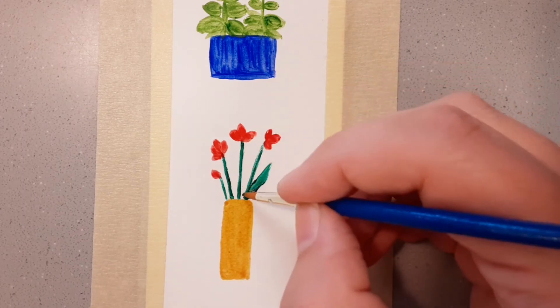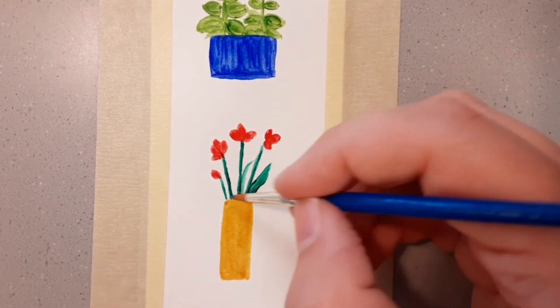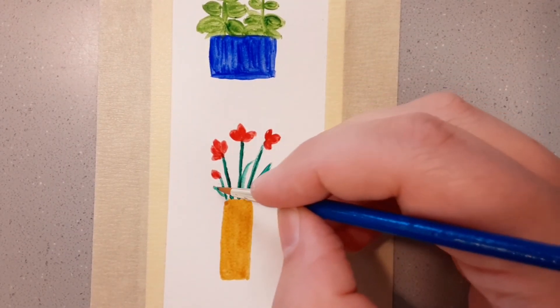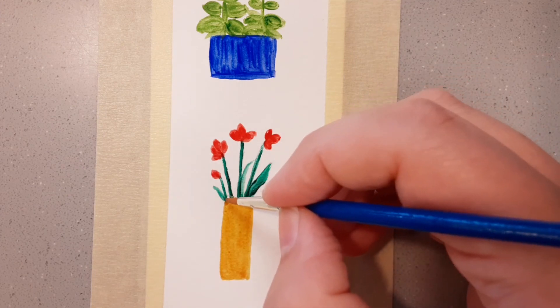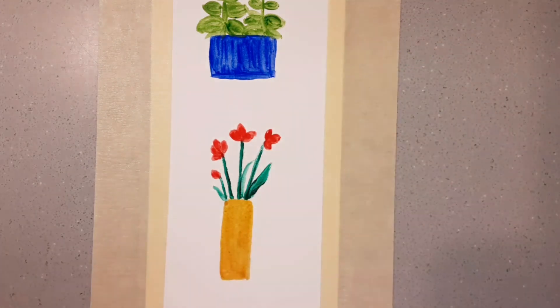Now leaves again. Heavy pressure, flicking up into light pressure. Helps to practice on another piece of paper.